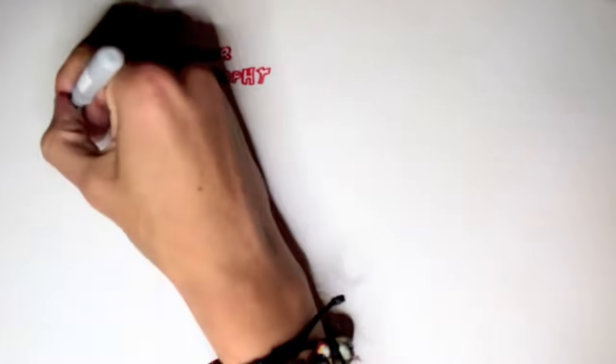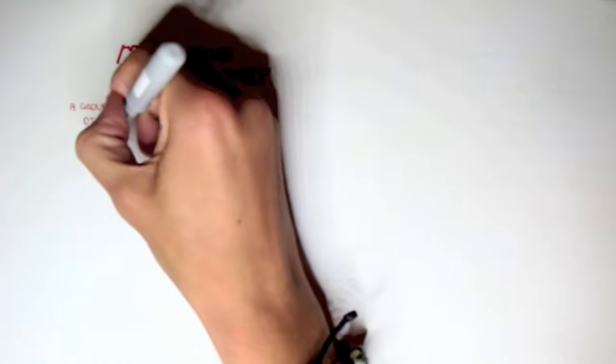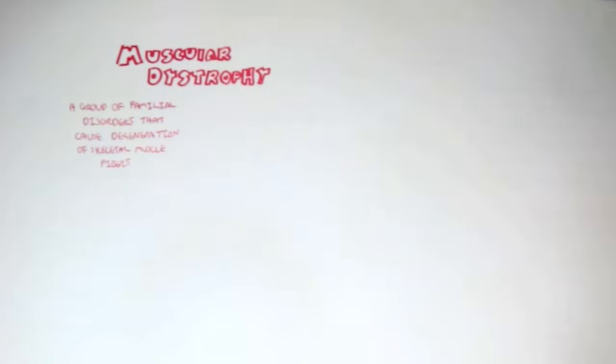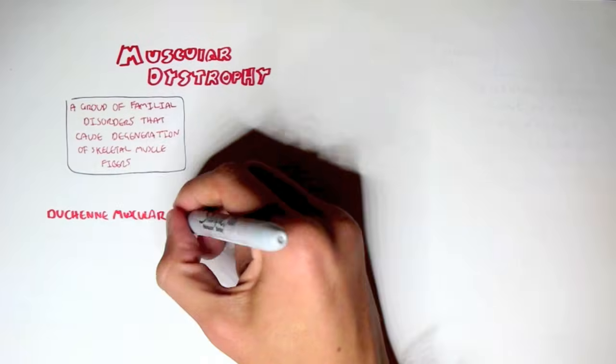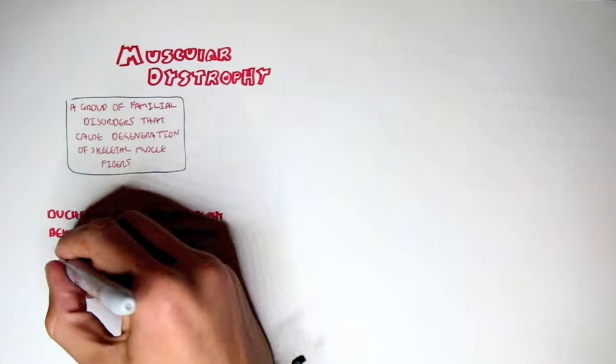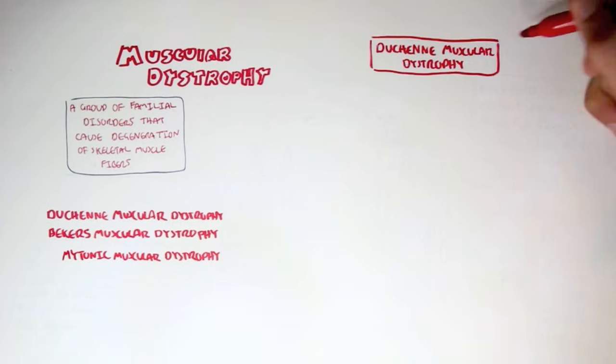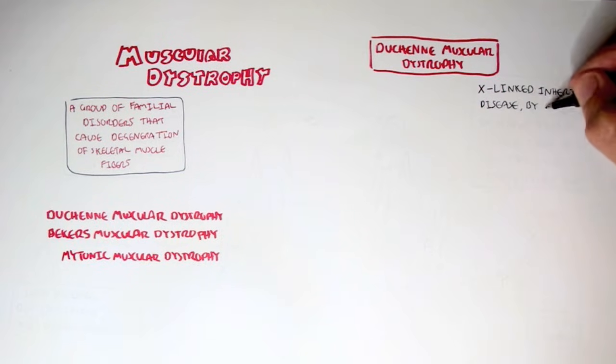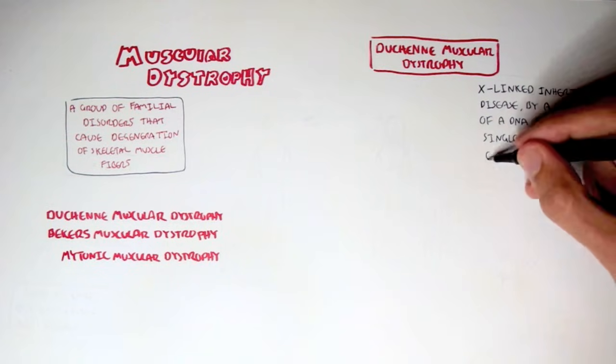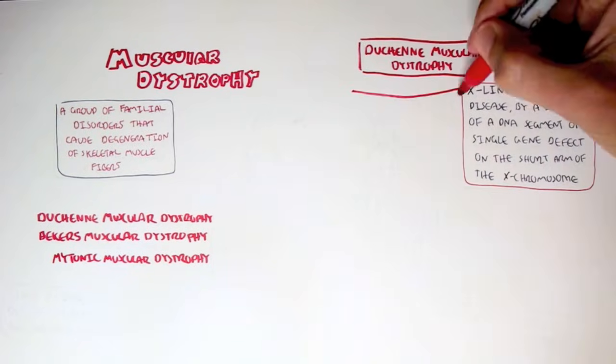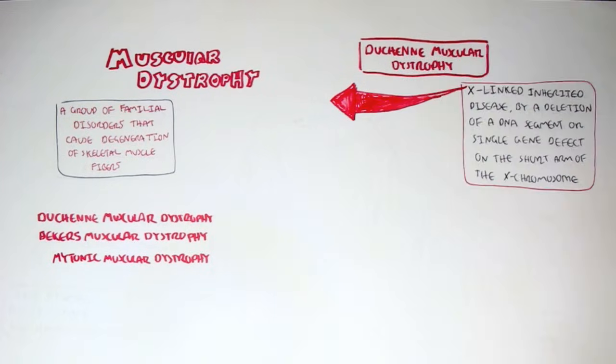Muscular dystrophy is a group of familial disorders that cause degeneration of skeletal muscle fibers. There are a few types of muscular dystrophy. We're going to look into the Duchenne muscular dystrophy, Becker's muscular dystrophy, and the Myotonic muscular dystrophy. Let's begin with Duchenne muscular dystrophy. Duchenne muscular dystrophy is an X-linked inherited disease caused by a deletion of a DNA segment or a single gene defect on the short arm of the X chromosome. So what does an X-linked inherited disease mean? Well, let's look at some genetics.